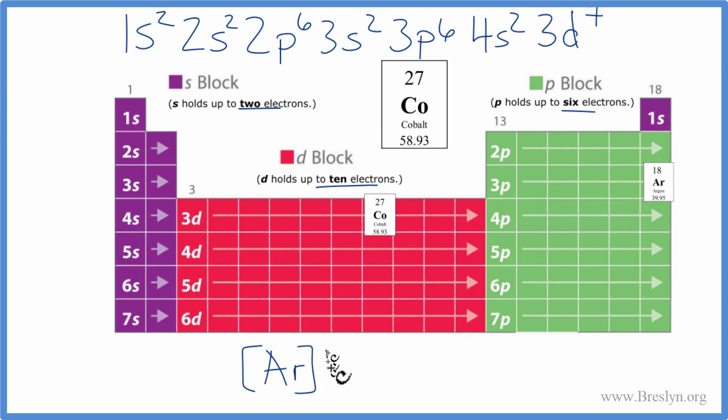So we have 4s1, 4s2, and then we have our 3d7. So this is the condensed notation for the electron configuration for cobalt.